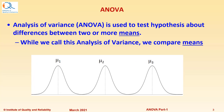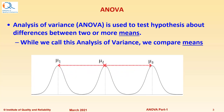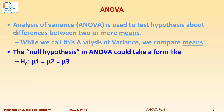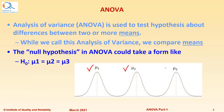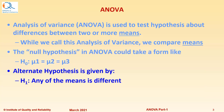While we call this analysis of variance, we are actually comparing means of the groups. The null hypothesis in ANOVA could take a form like H0: mu1 equals mu2 equals mu3. You could have more population means also. The alternate hypothesis H1 states that any of the means is different.